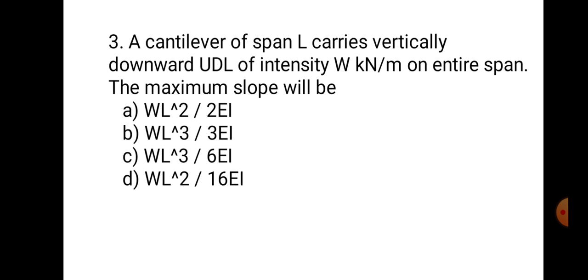Question number three. A cantilever of span L carries a vertically downward UDL of intensity W kN/m on the entire span. The maximum slope for a cantilever carrying UDL on the entire span is WL³ upon 6EI. The correct answer is C: WL³ upon 6EI.